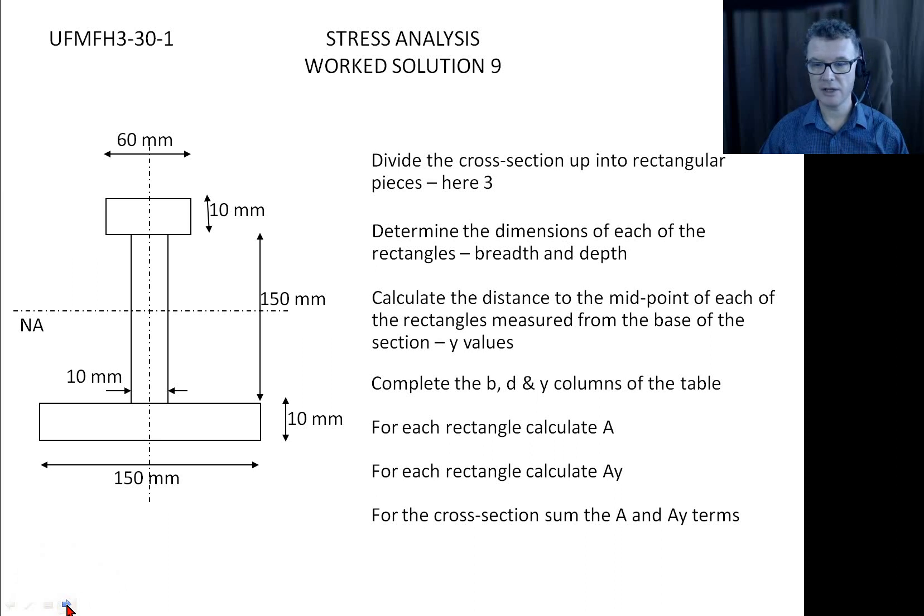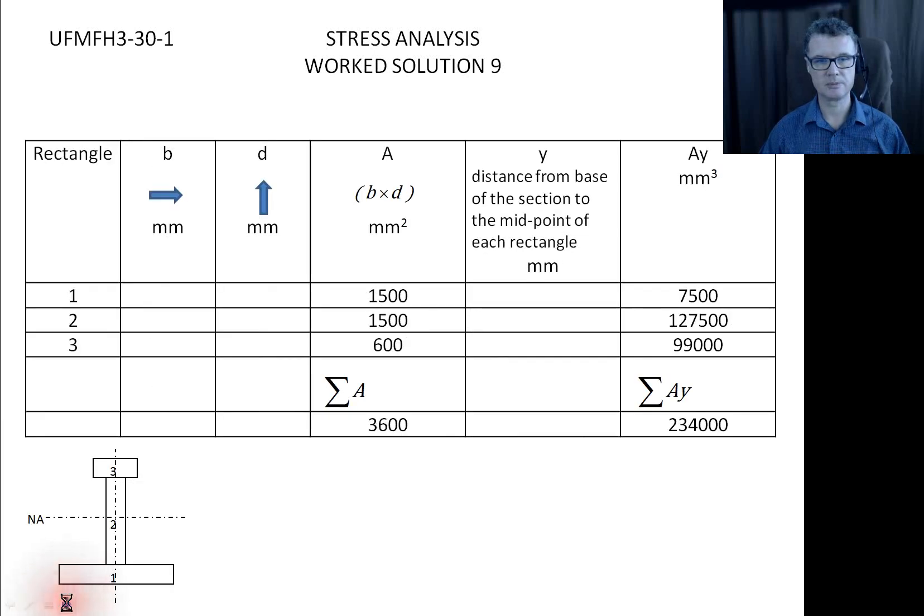So area times centroid position will be another column that we want, area will be another column that we want. And then to find the final centroid, we're going to sum up all the first area of moments, that's the Ay terms, and then divide them by the sum of the areas, and that will give us what I'm calling the neutral axis.